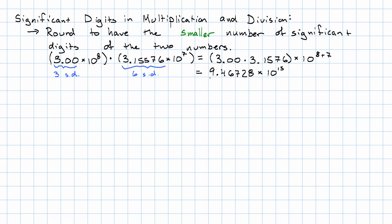But I need to round to have 1, 2, 3 significant digits. Here's a 6, the next digit is a 7, so I'll round up. I get 9.47×10¹⁵.